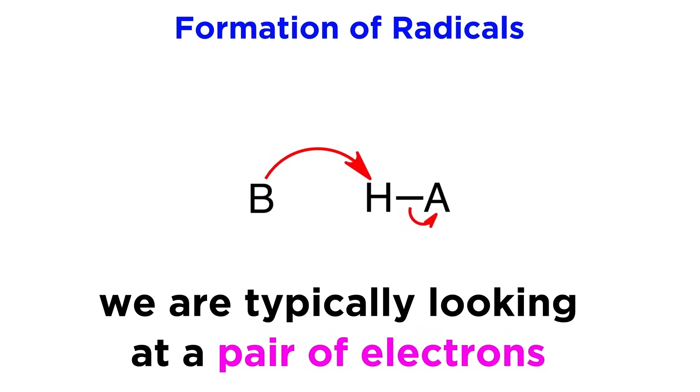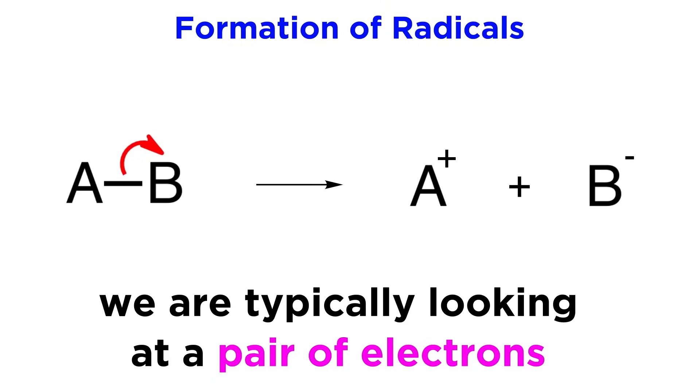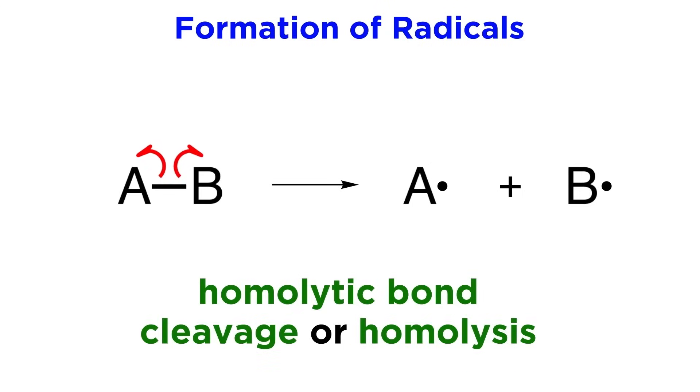Every bond that breaks and forms involves the activity of a pair of electrons, just like here, with AB becoming A plus and B minus. But to get a radical we will need homolytic bond cleavage, or homolysis.